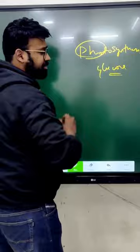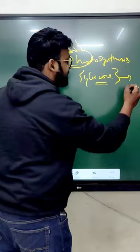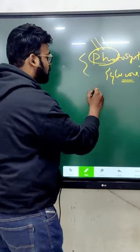Here we are using the incident radiation so that we can manufacture the glucose, which is C6H12O6. This is called photosynthesis.